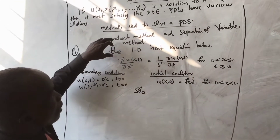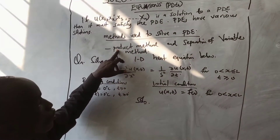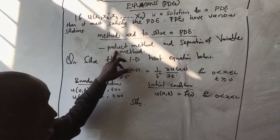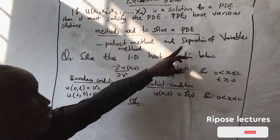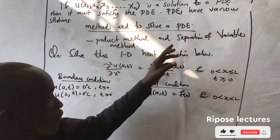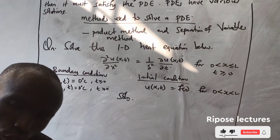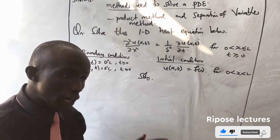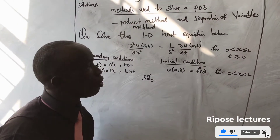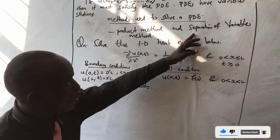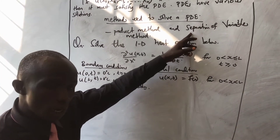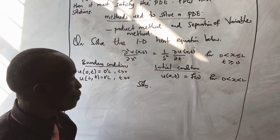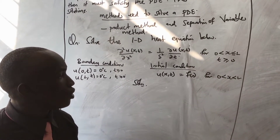There are two methods to solve a PDE: number one, the product method, and number two, the separation of variables method. Either the product method or the separation of variables method can be used to solve the PDE.